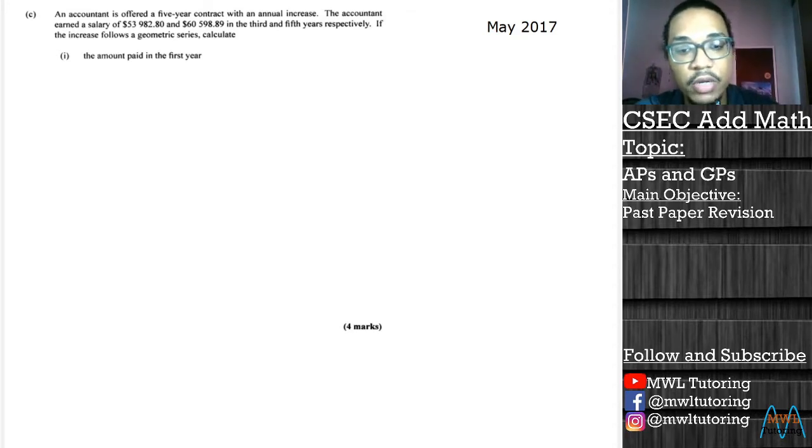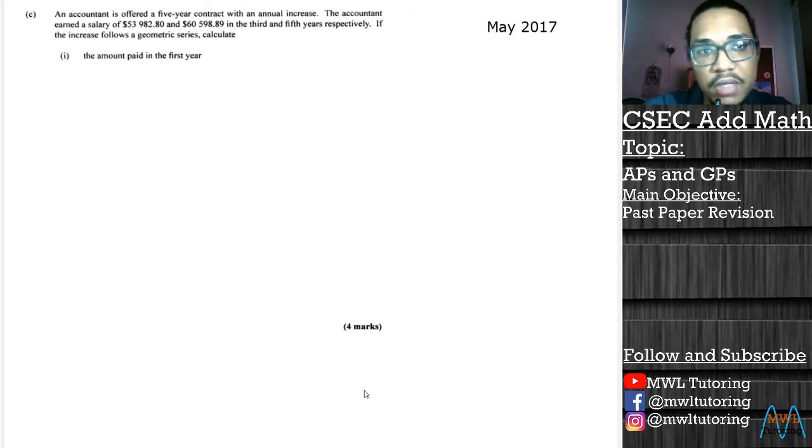I'll start by reading the question. It says an accountant is offered a five-year contract with an annual increase. The accountant earned a salary of $53,982.80 and $60,598.89 in the third and fifth years respectively. Now let me pause for a minute. This question is talking about this guy's salary and they gave us some very annoying numbers.